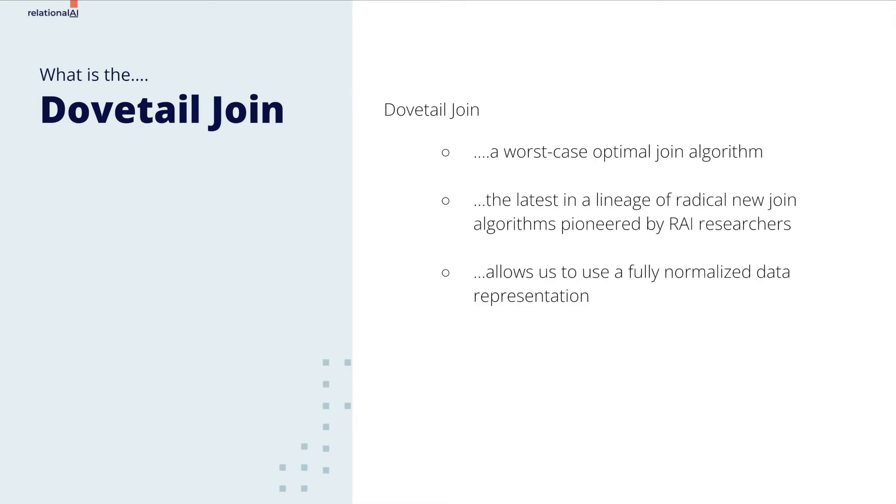Dovetail join is a worst-case optimal join algorithm, which means we can mathematically prove that the more complicated the problem is, the faster we will go.